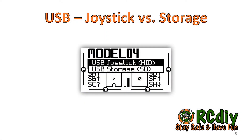For FRSky transmitters, the mass storage option has been removed from Companion and placed on the radio setup screen. The options are to default to joystick, mass storage, or ask. Using the ask option with the transmitter on, connecting it to a computer using a USB cable brings up a menu to choose between joystick and storage.